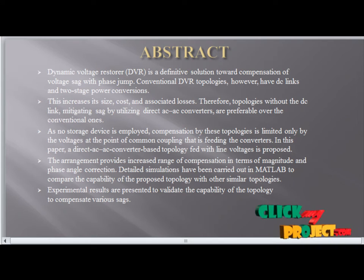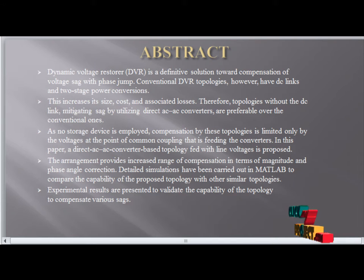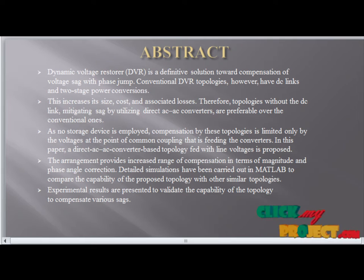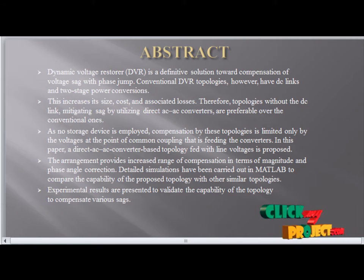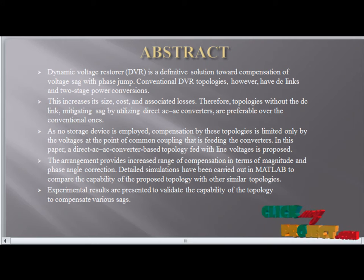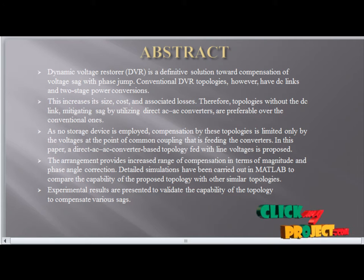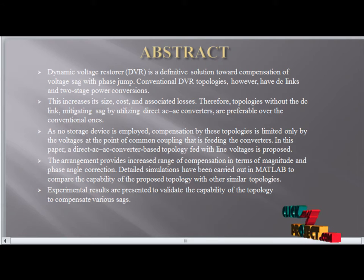Abstract. A Dynamic Voltage Restorer is a definitive solution toward compensation of voltage sag with phase jump, using conventional DVR topologies. However, these have a DC link with two stages of power conversion, which increases the size, cost, and associated losses.